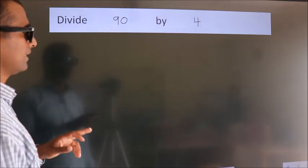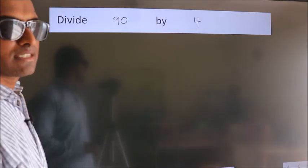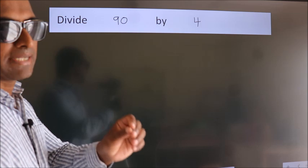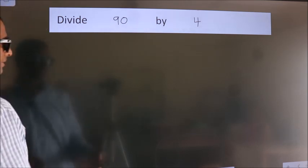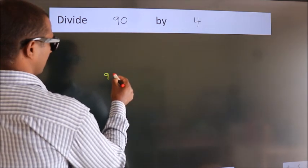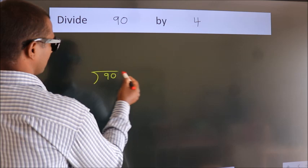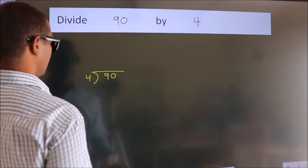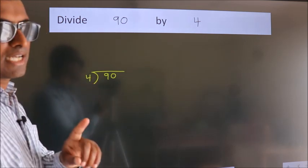Divide 90 by 4. To do this division, we should frame it in this way: 90 here, 4 here. This is your step 1.